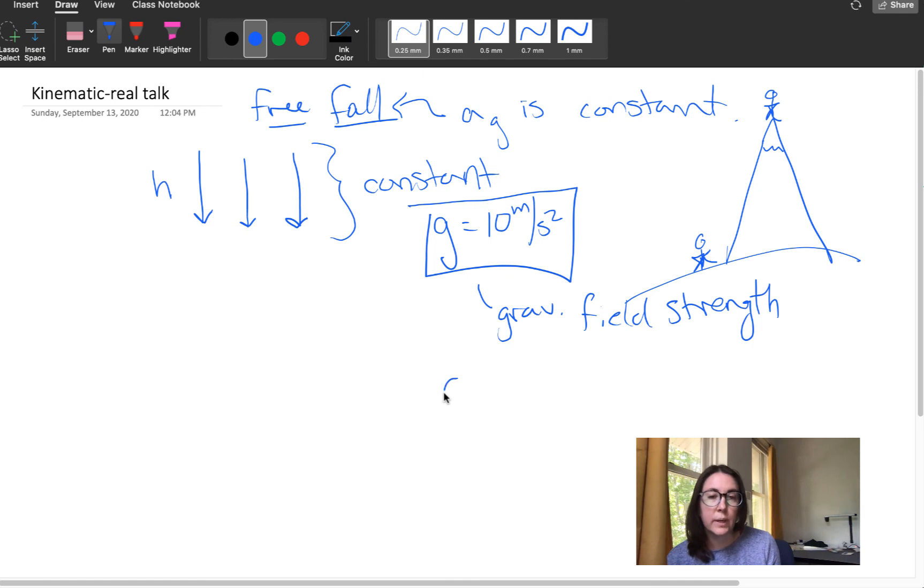The acceleration due to gravity is down. So we call down positive—we always need to set a coordinate system. Sorry, down, not positive. We'll call down negative. So if down is negative, gravity pulls things down in the negative direction, so the acceleration is going to be negative.